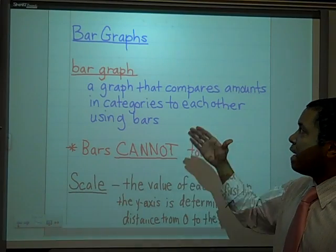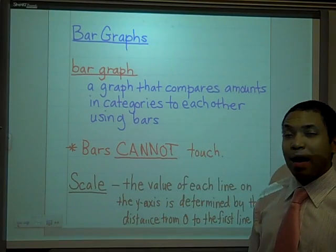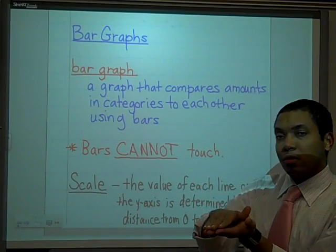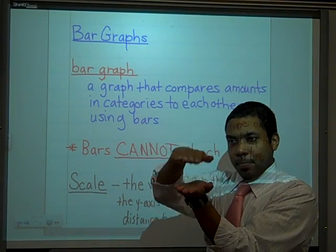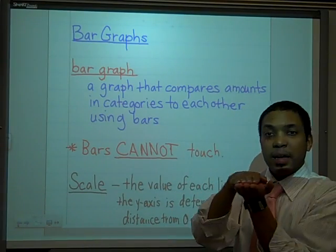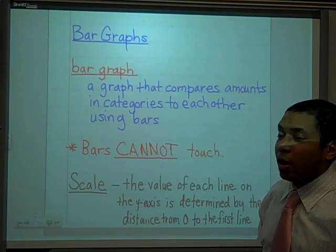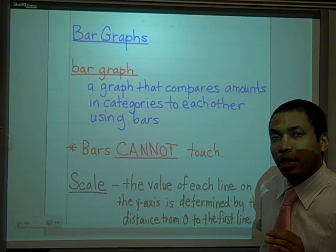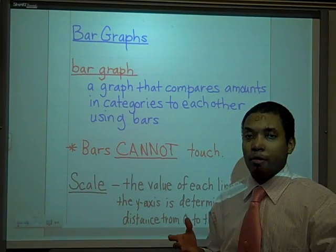So a bar graph is a graph that compares amounts and categories to each other. So a bar graph literally will look like this. We'll see a bar, we'll see a space, a bar, a space, a bar, a space. The main thing about a bar graph that makes it very unique is that the bars cannot touch each other if you're talking about a single bar graph.